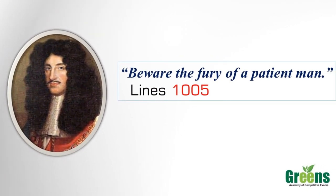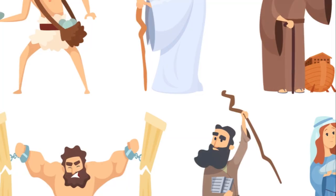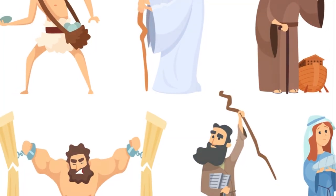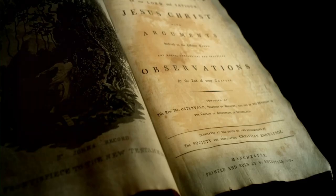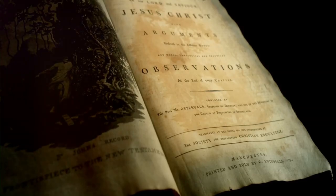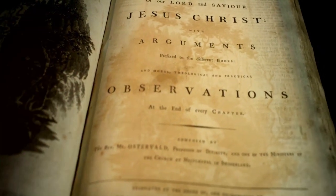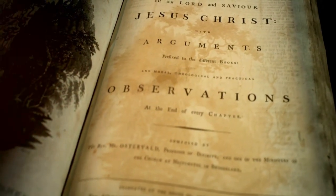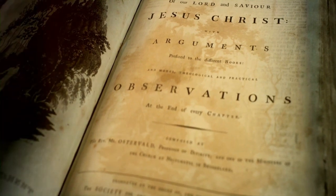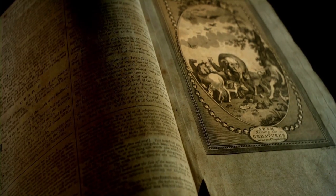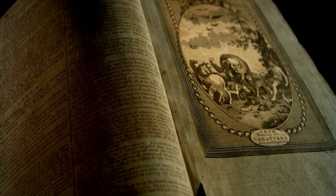Absalom and Achitophel has several themes including: political satire, biblical allegory, power and ambition, temptation, sin, fall and punishment, and finally, God, religion, and the divine right of kings.